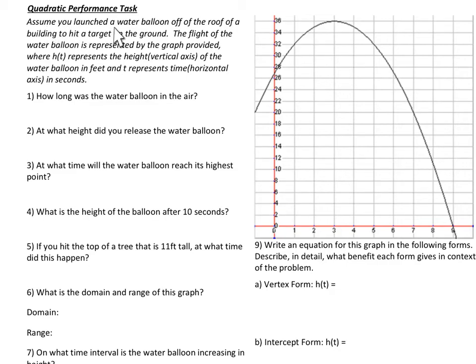All right, assume you launch a water balloon off the roof of a building to hit a target on the ground. If you think of this as your roof and you launch a water balloon up, hit it right there. The flight of the water balloon is represented by the graph provided. This is H of T, where H of T represents height, vertical, and the water balloon in feet, and T represents time. The horizontal axis is in seconds. So this is how long it's been, and this is the height. So height, time, in seconds. We're going to ask a lot of questions based upon this graph.